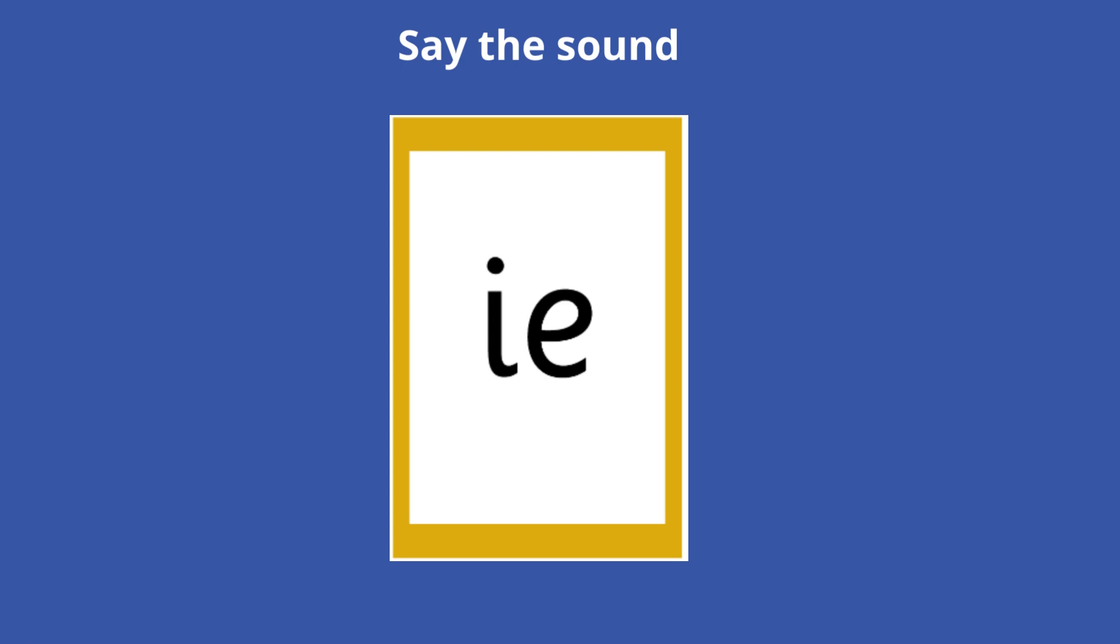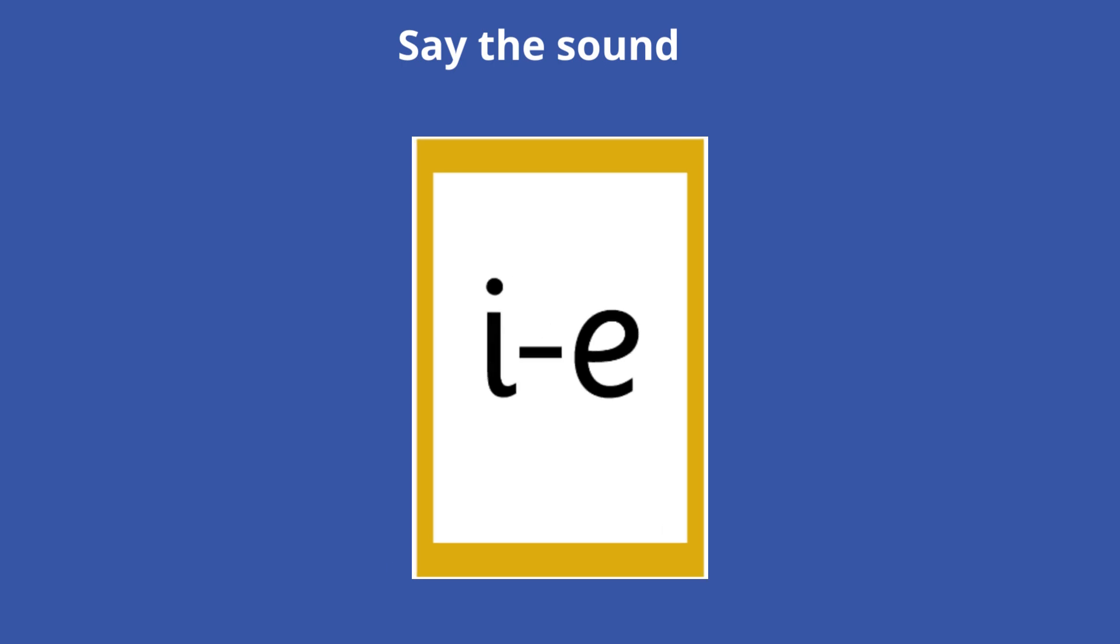They have remembered that the letters I and E are a digraph that can make the I sound. And these two letters also make the I sound as a split digraph, that means when they are apart in a word.